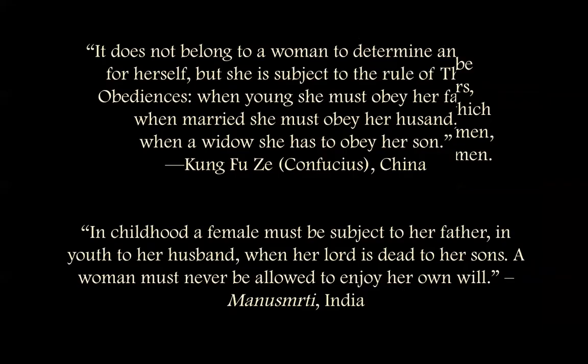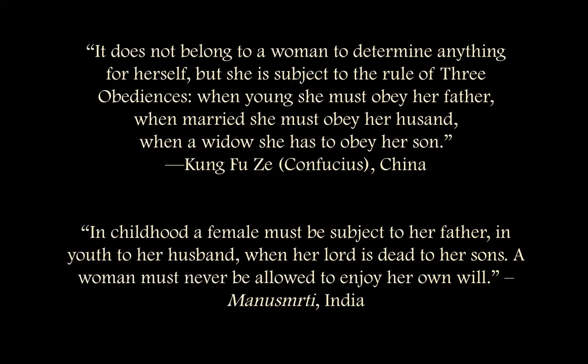There's a very interesting pattern we can see across major patriarchal systems. In China, Kung Fu Tzu — or Confucius — said a woman does not determine anything for herself, but is subject to the rule of three obediences: when young, she obeys her father; when married, her husband; when a widow, she has to obey her son.